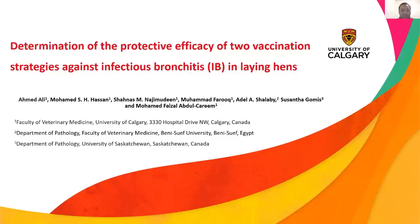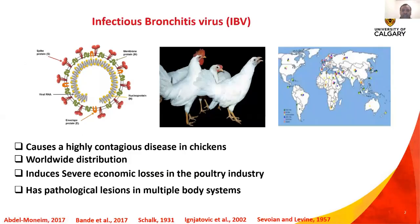Thanks for this nice introduction. I'm going to talk to you about determination of the protective efficacy of two vaccination strategies against infectious bronchitis in laying hens. First, I'm going to give you a short overview about infectious bronchitis virus. Infectious bronchitis virus is an RNA virus belonging to gamma coronavirus, family Coronaviridae. It causes a highly contagious disease in chickens called infectious bronchitis disease.